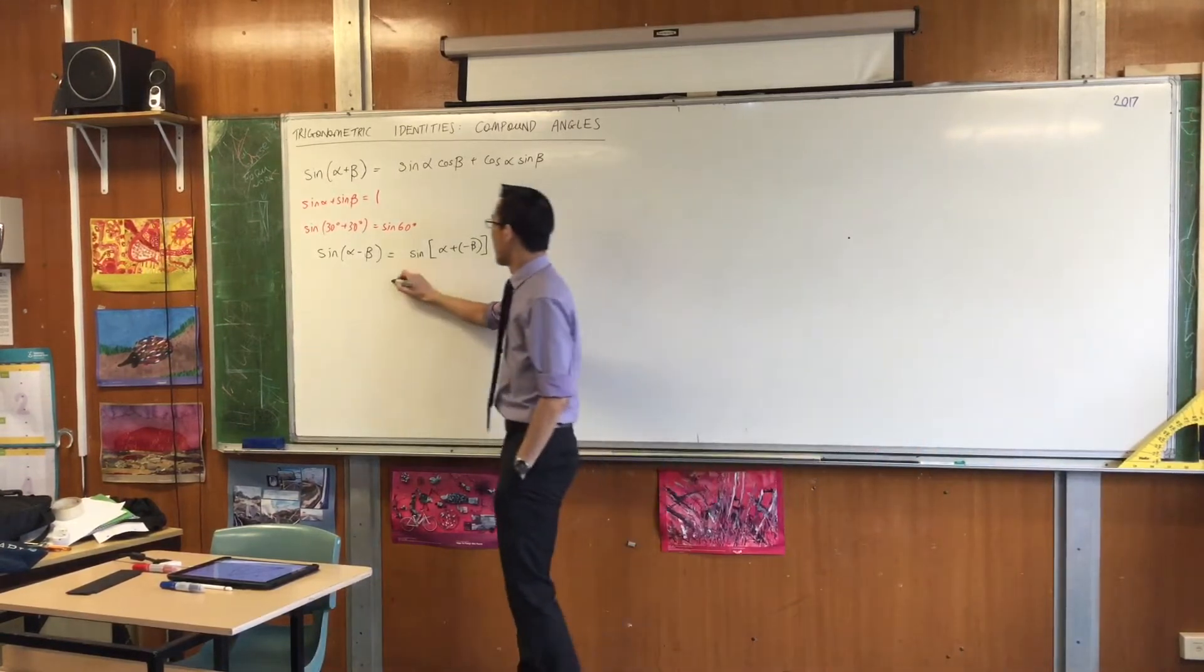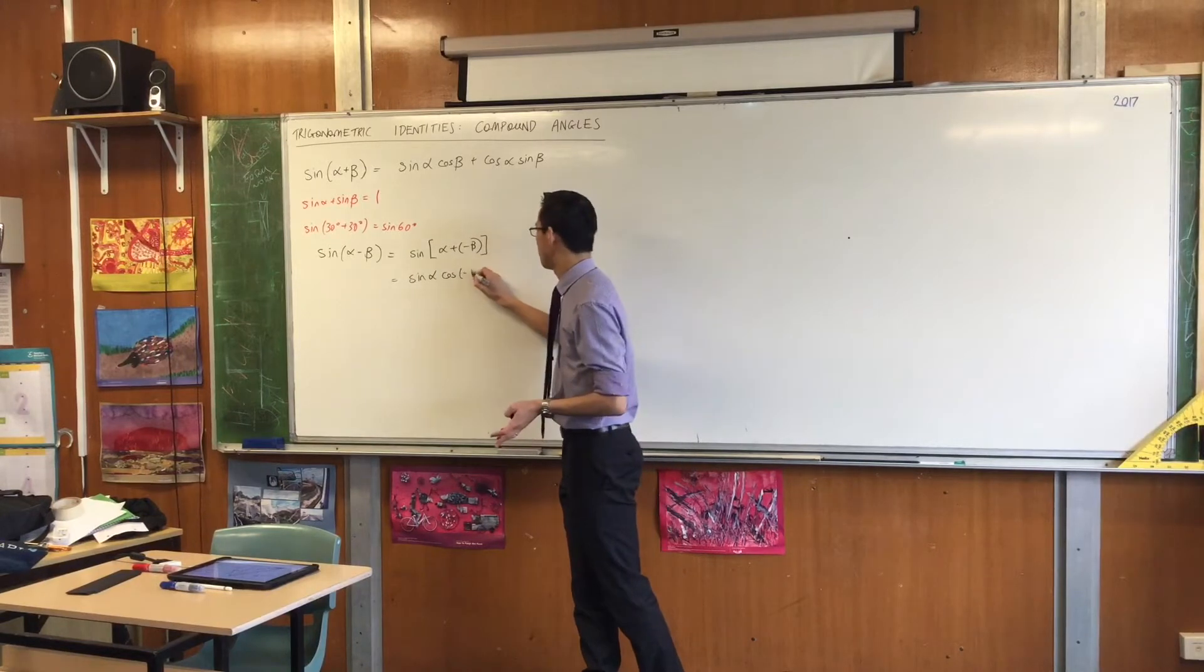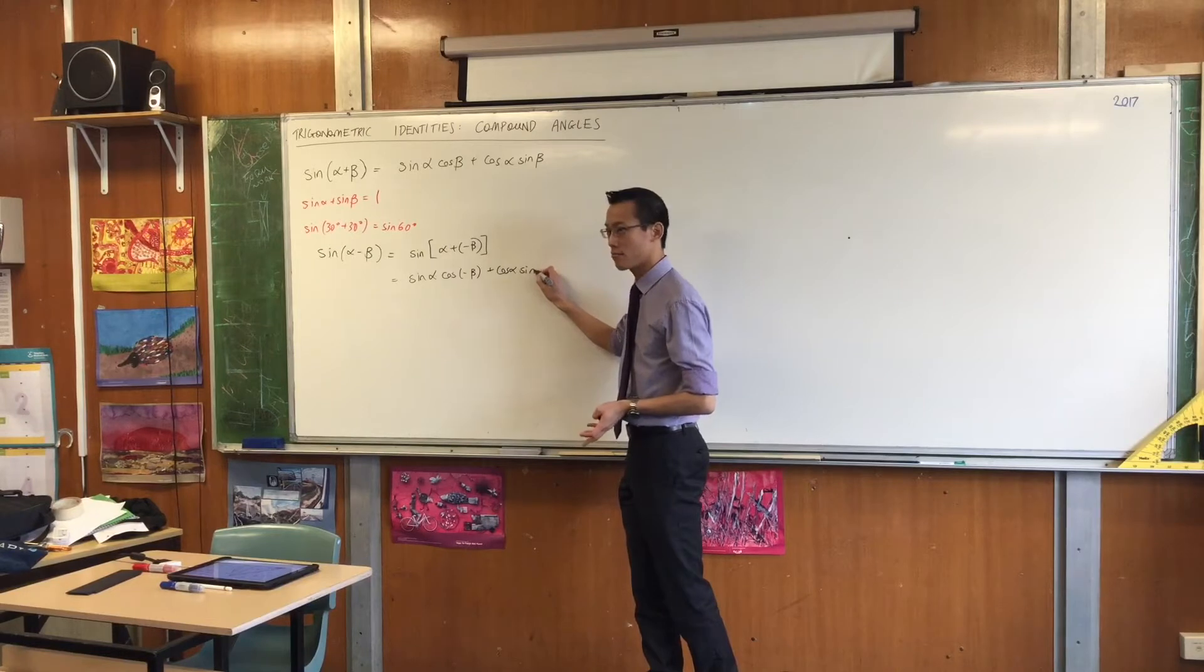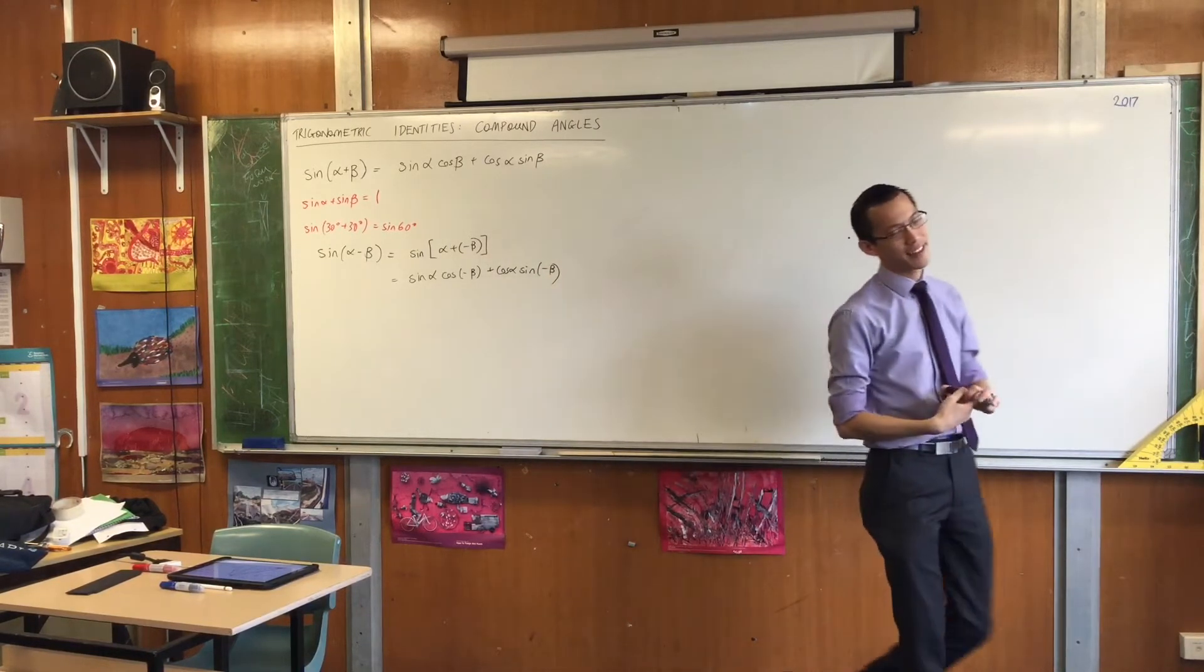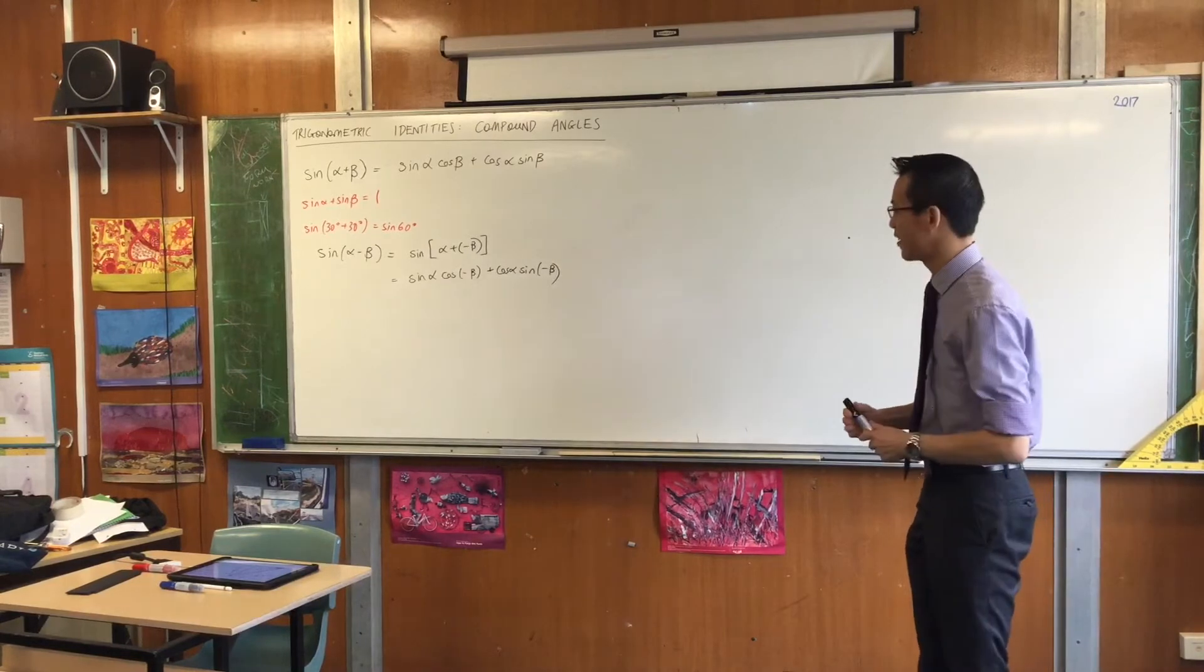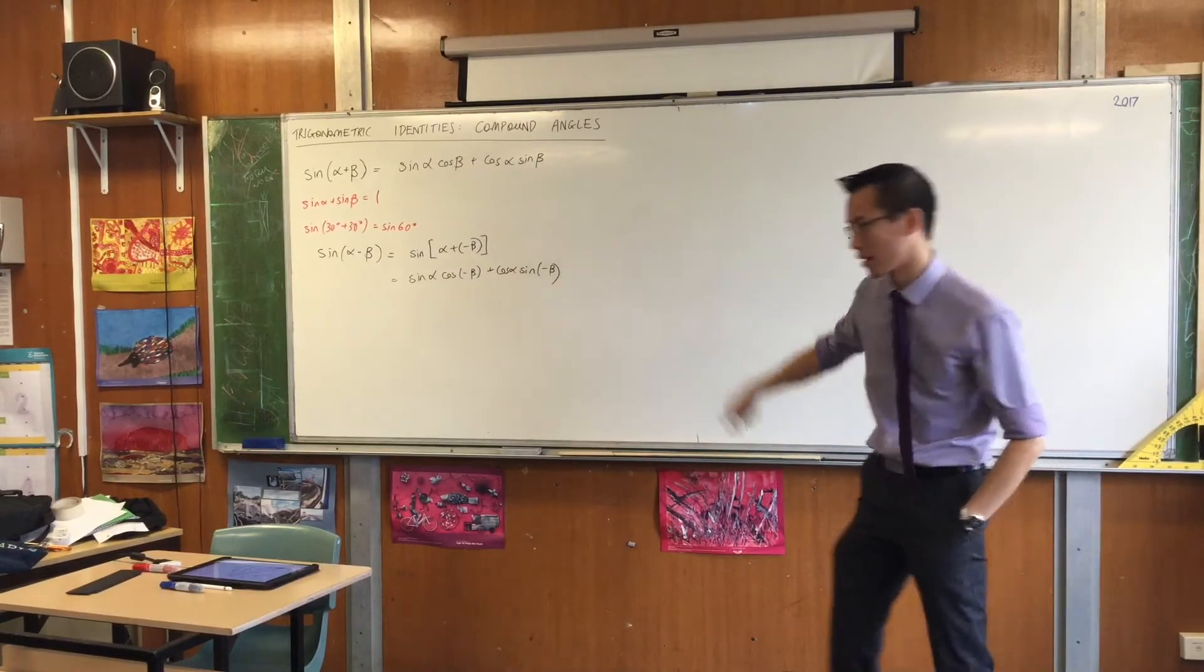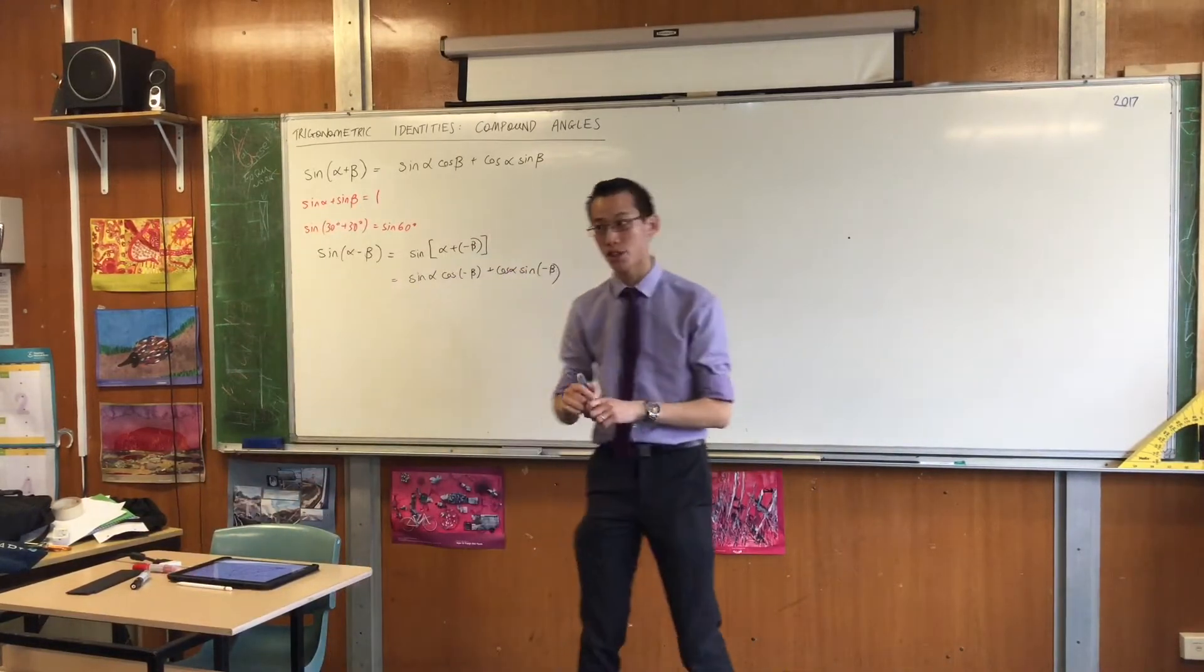Okay, so help me out. I'm going to write sine alpha cos what? Negative beta. Plus cos alpha sine negative beta. Okay. Now, I can use all that knowledge I gained from graphing earlier, a couple of weeks ago, to help me work out what to do with this thing. Okay? Off on the side here, I want you to draw for me a couple of tiny graphs.